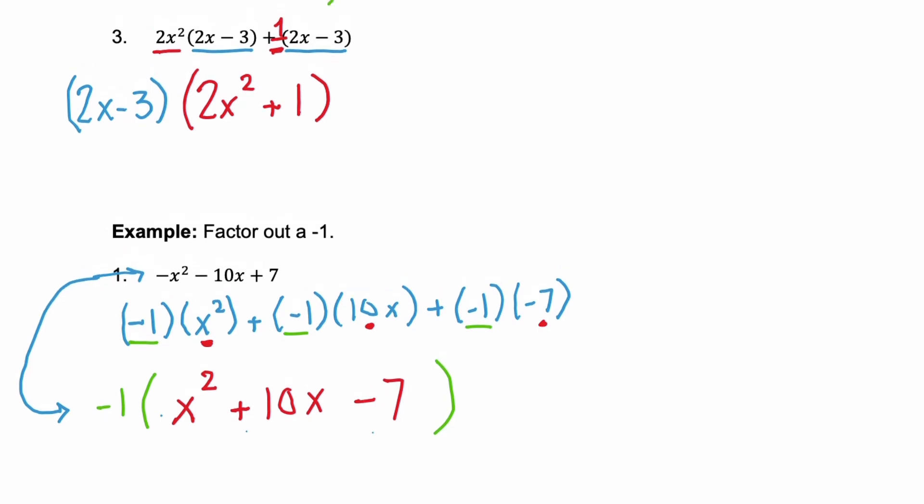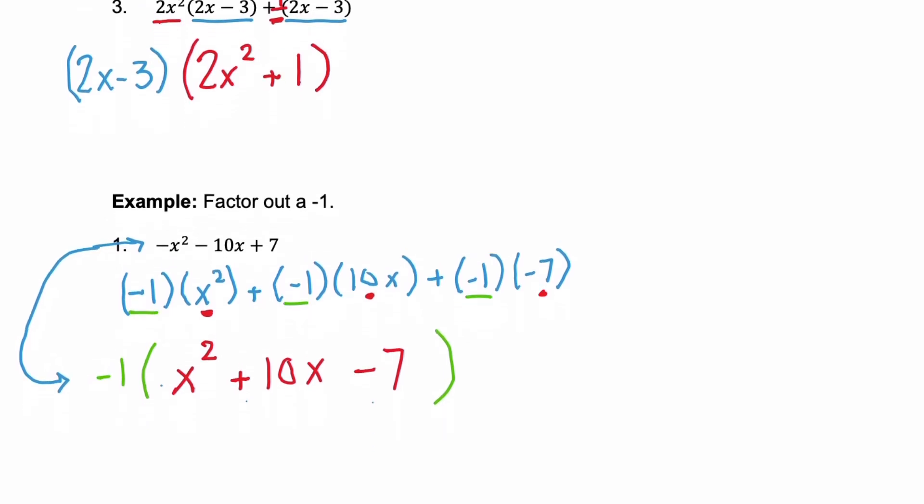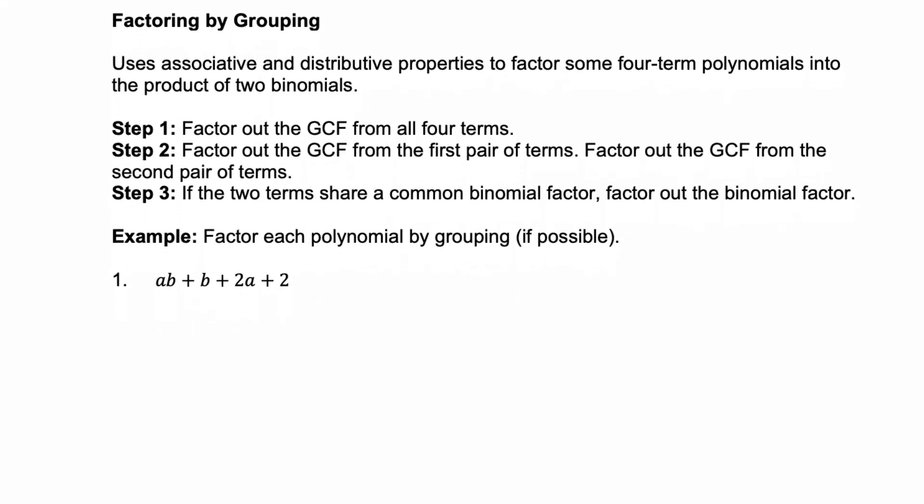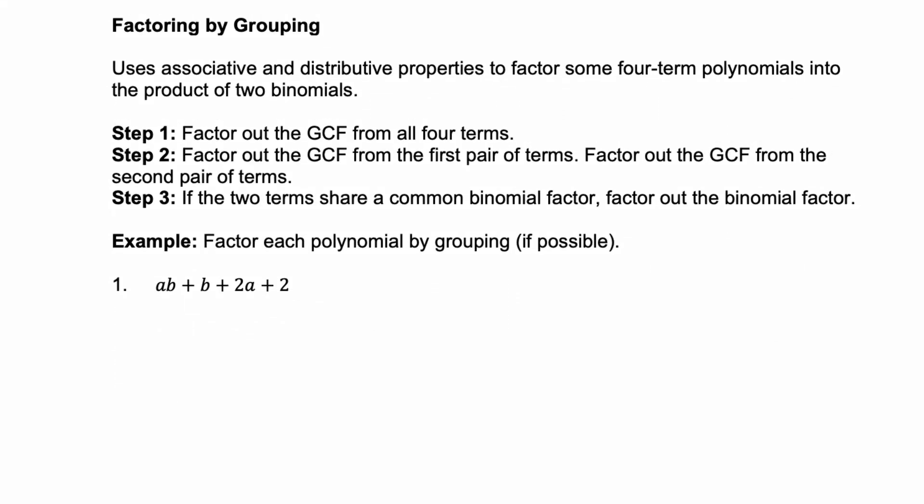Okay, now that we're comfortable with finding a GCF and factoring it out, let's look at how to factor by grouping. Factoring by grouping uses associative and distributive properties to factor four term polynomials into the product of two binomials. If you ever come across a problem that you have to factor, and it has four terms, that should scream to you, factor by grouping. There are three steps, and we're going to go through each of these steps for each of these two examples below.